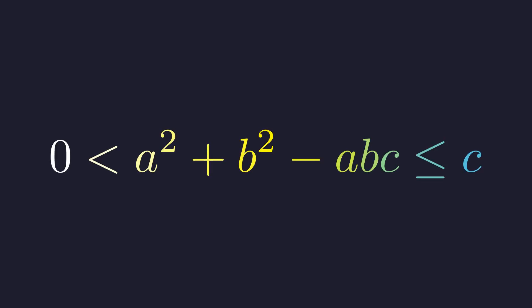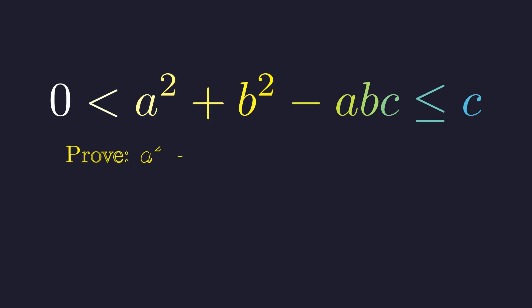We start with three positive integers a, b, and c that satisfy this constraint. Our goal is to prove that this expression is always a perfect square.